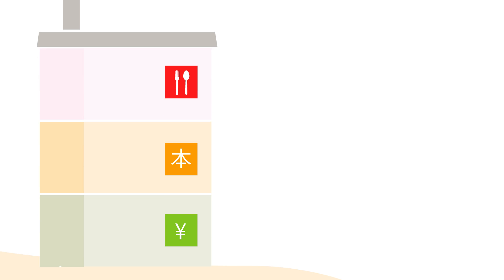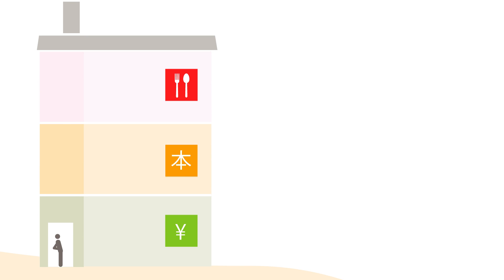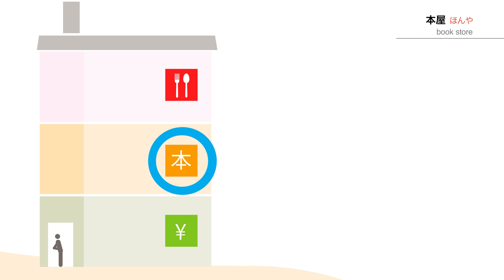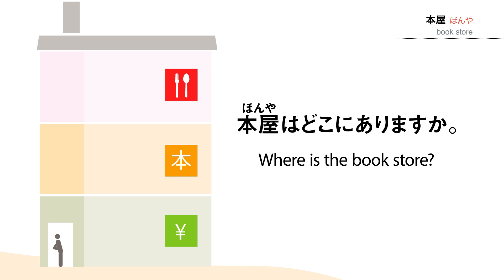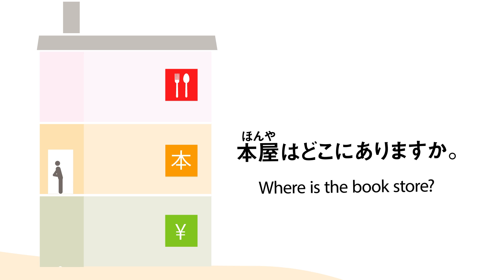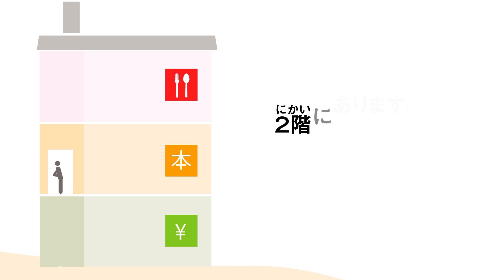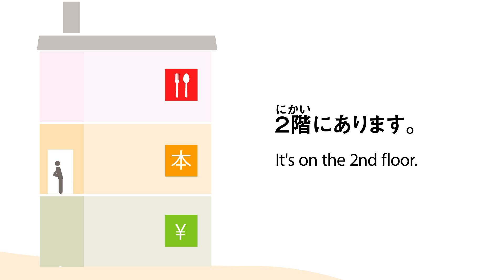Let's practice. You're on the first floor of a department store and using this diagram to figure out where to find the individual stores. First, you want to go to the bookstore. Ask where it is. ほんやはどこにありますか? — Where is the bookstore? Now, what's the answer?